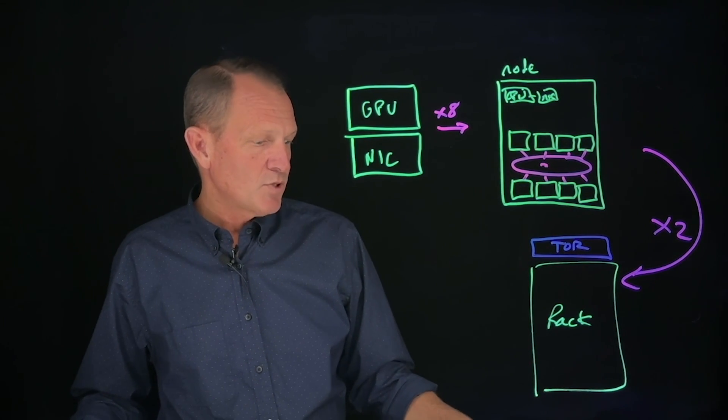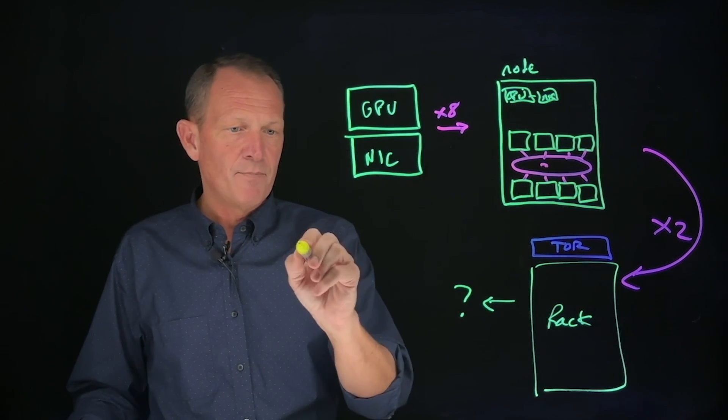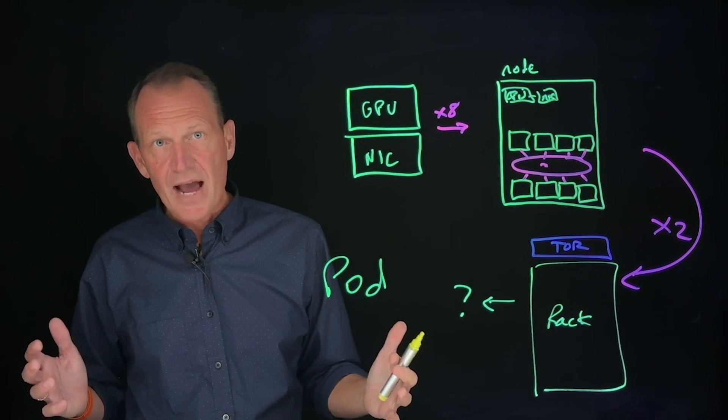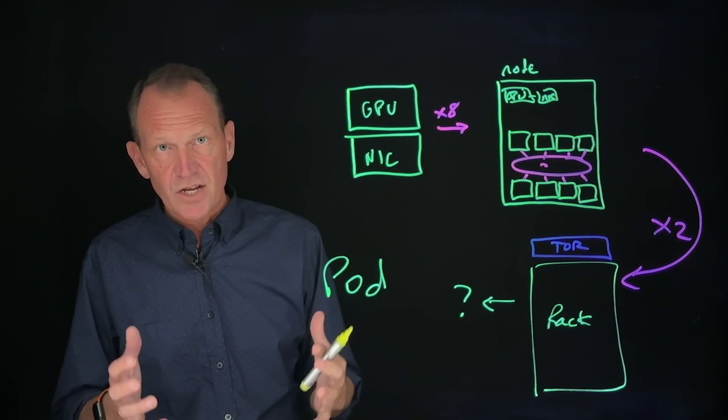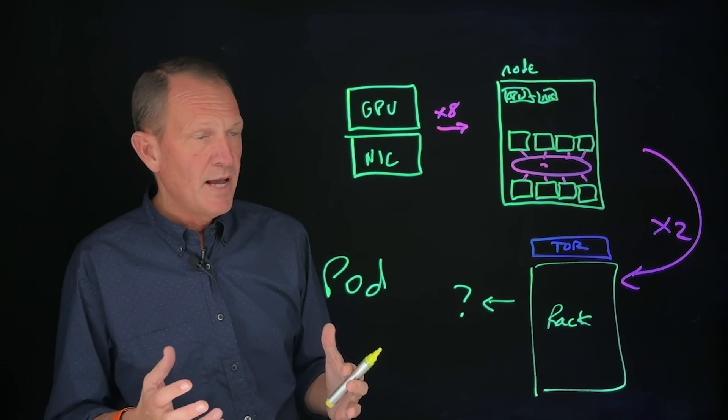Finally, the final unit that most operators use is to take these and have some amount of them in a pod. A pod is really just a collection of racks, which allows them to have a management unit, perhaps an organizational unit of federated capacity within a data center.